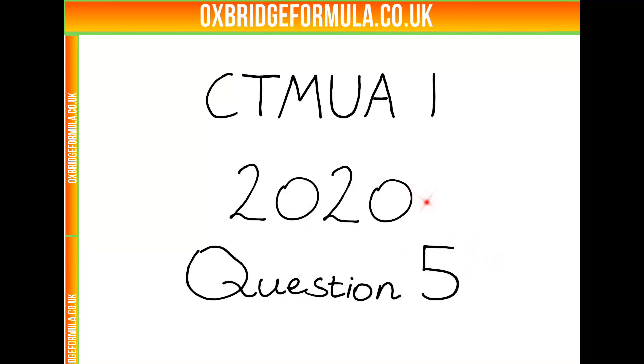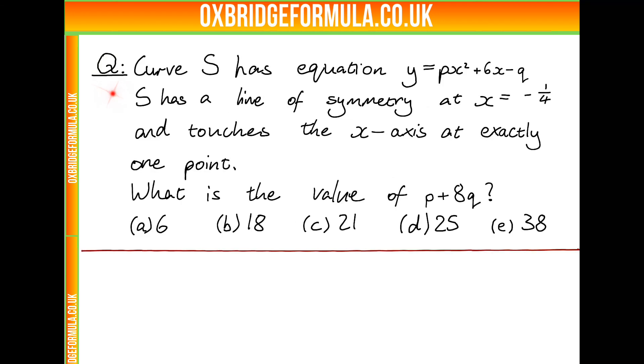Welcome to question 5 from the 2020 CTMUA paper 1. The question tells us that the curve S has equation y equals px squared plus 6x minus q, and that it has a line of symmetry at x equals minus a quarter. We are also told that it touches the x-axis at exactly one point. Using this information, we are asked to find the value of p plus 8q.